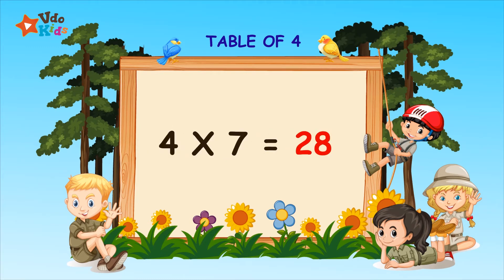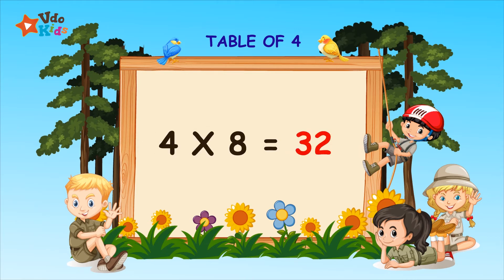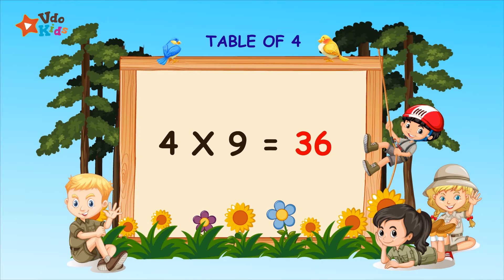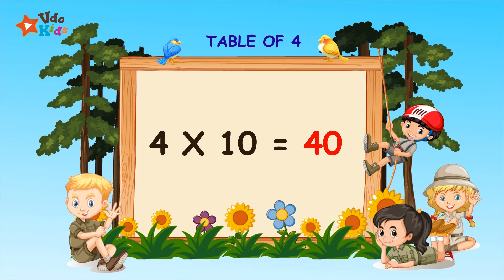Four sevens are twenty-eight. Four sevens are twenty-eight. Four eights are thirty-two. Four nines are thirty-six. Four tens are forty.